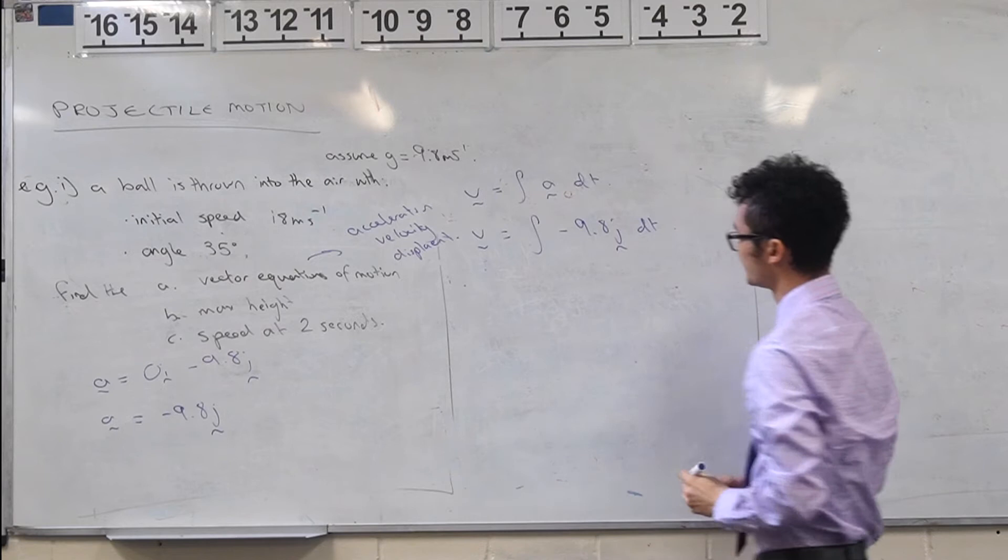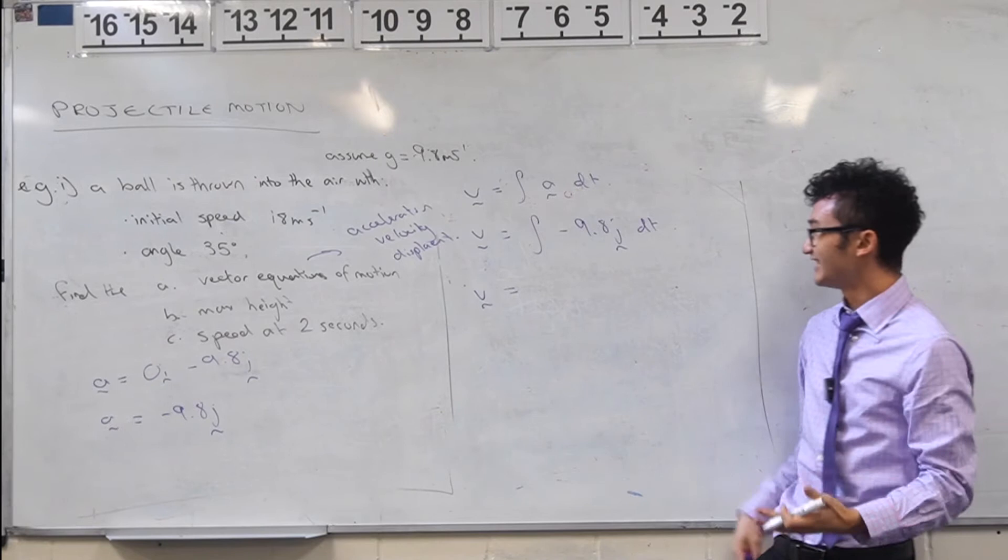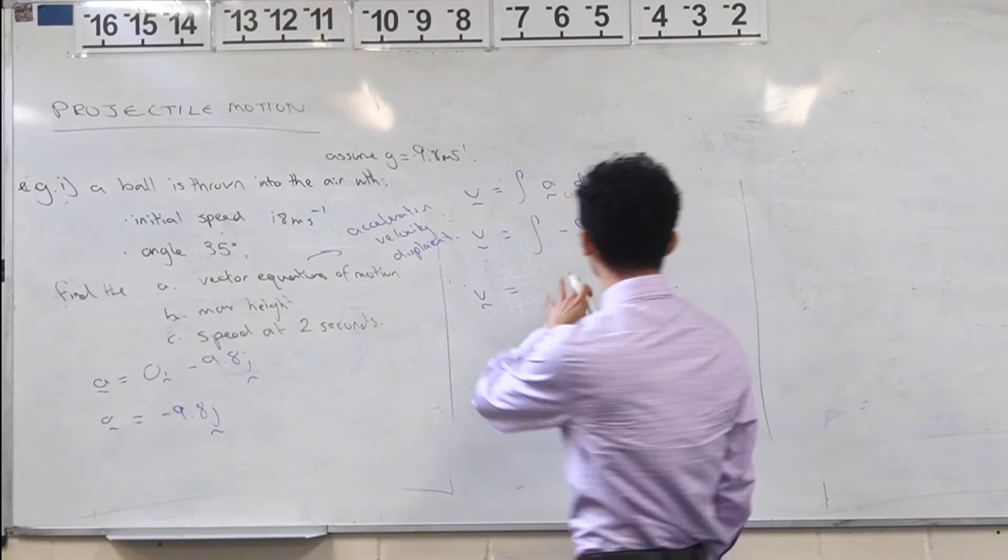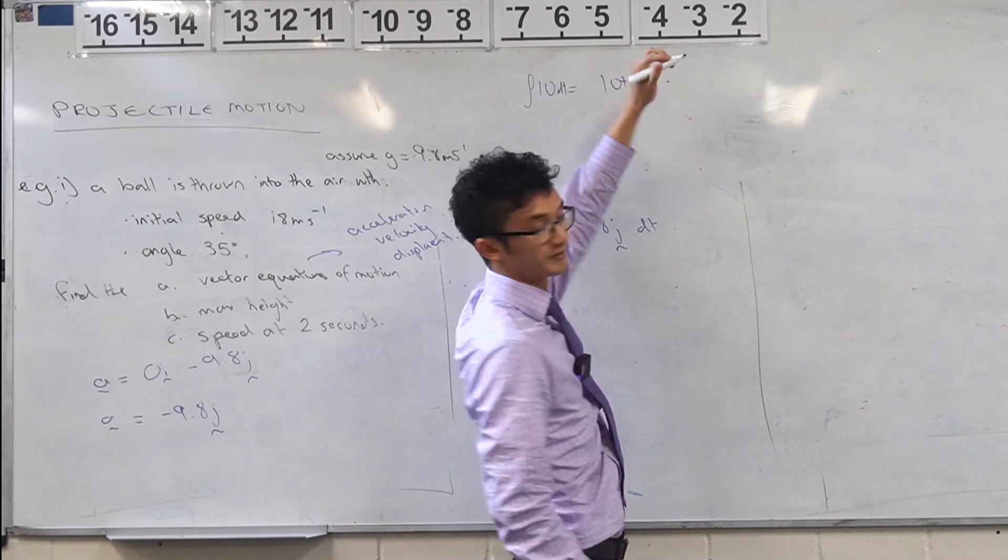And when you integrate this, there are a few things you have to consider. First of all, this j component is kind of like a unit. So when I'm integrating with respect to t, this is just a constant. And if you integrate a number, what do you actually get? Well, if this is just a number, like if you integrate 10 for example, what would that become if I just integrated 10? 10x or 10t. Don't forget about your constant value.